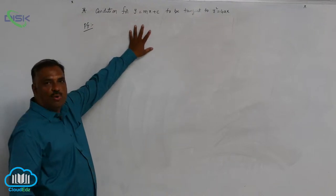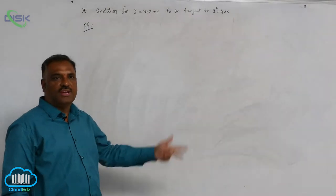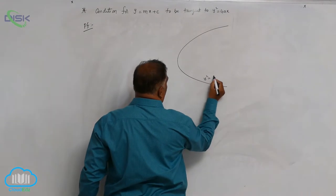We will discuss the condition for y = mx + c to be tangent to the parabola y² = 4ax. Let us see the curve y² = 4ax.